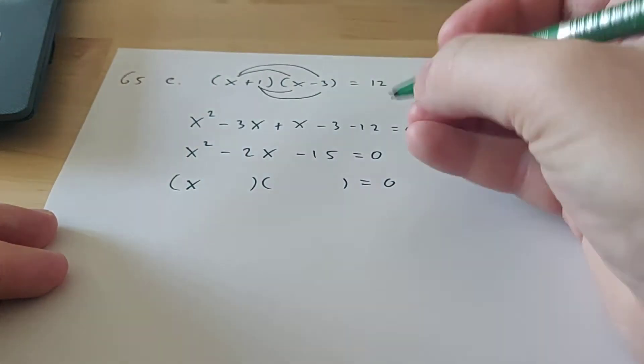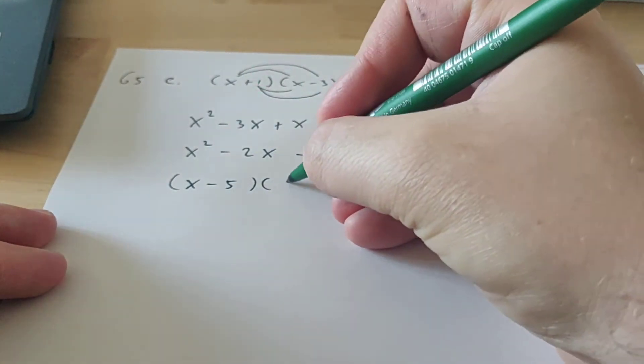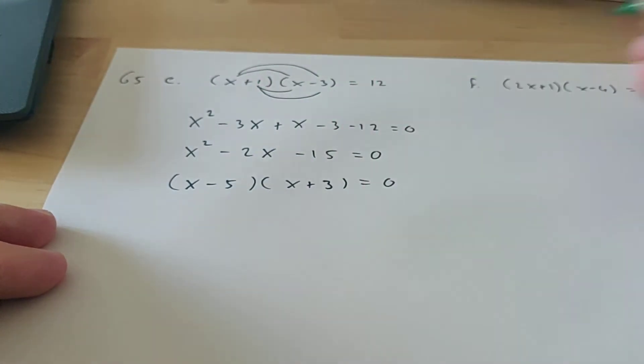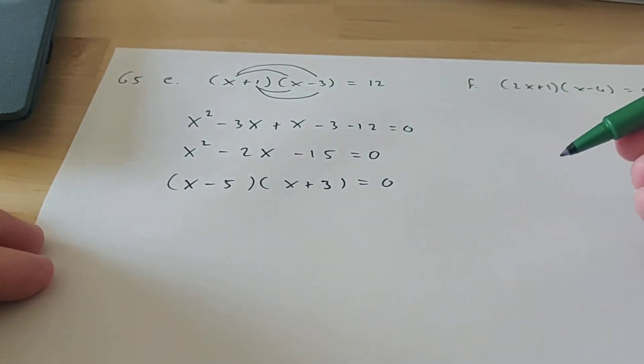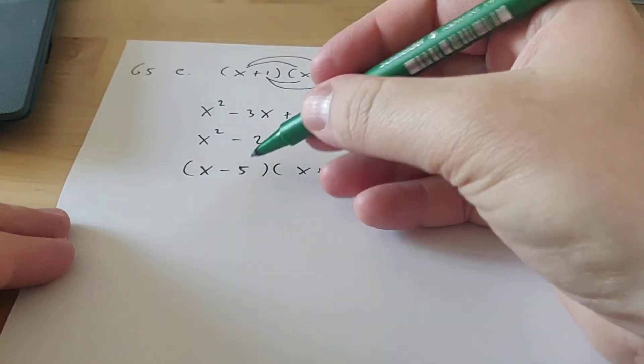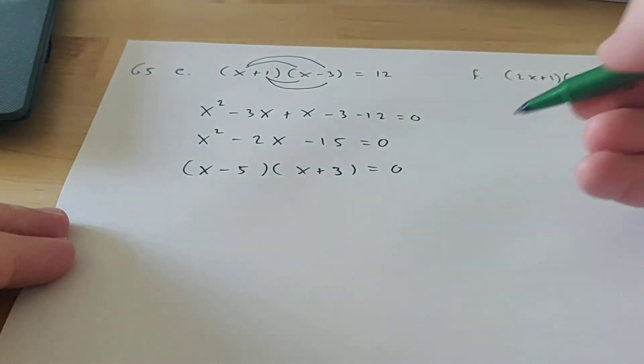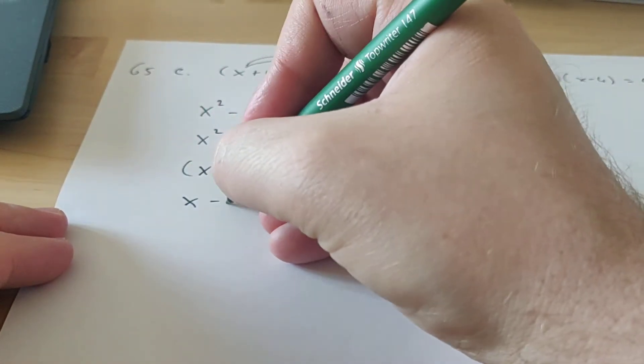So then you have x minus 5 and x plus 3. Because if you multiply them, you get that, and when you add them, you get that. So now we have x minus 5 in brackets times x plus 3 in brackets. So we can split it up.